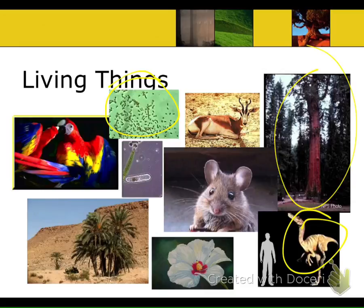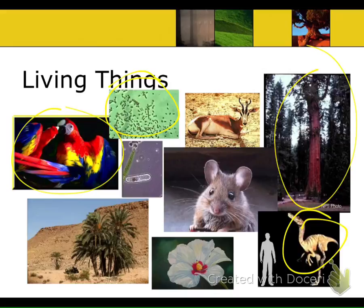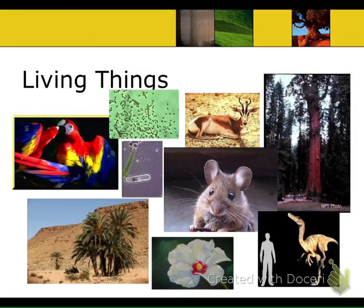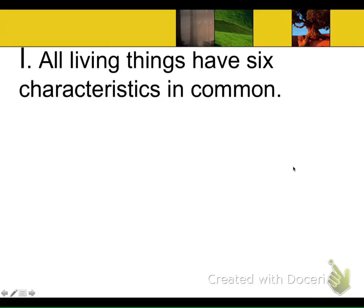How different all these creatures are from one another—as different as a human from a mouse, or as different as a tree from a scarlet macaw. Yet they all have some things in common: six specific characteristics. So what do all living things have in common? What six characteristics do we share?